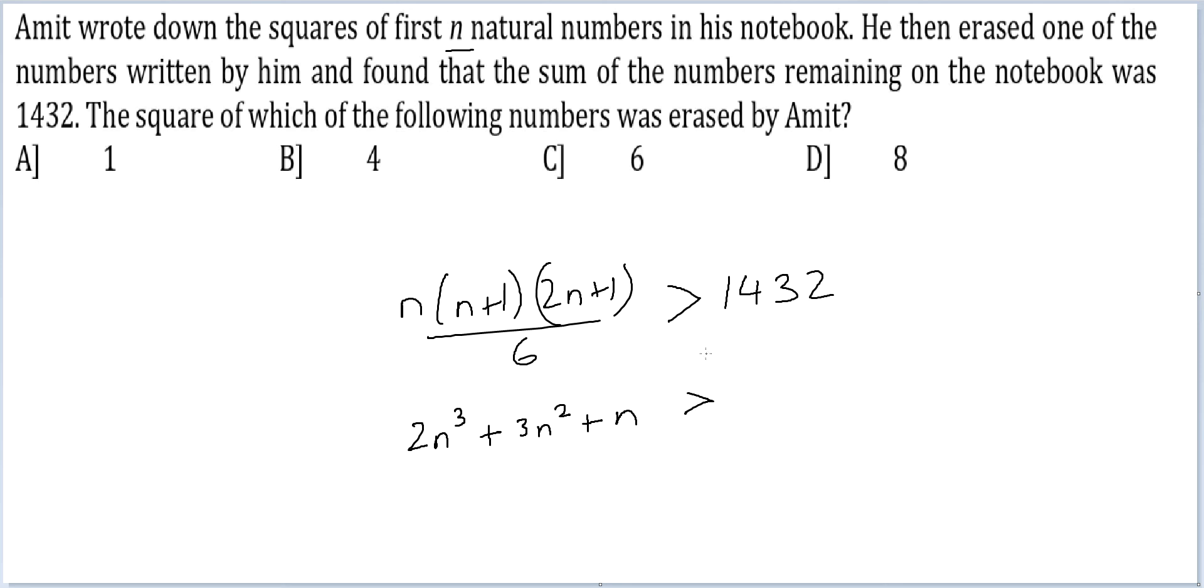So 8400 plus 32 into 6. 32 into 6 is 192, so 8592. Hopefully you can see that your answer will be close to 20 now. The n that you are seeking will be lower than 20, because if it had been 20, 2 into 20 cube is 16,000. It would have far exceeded this value here. So you have to replace different values of n and try to solve this.